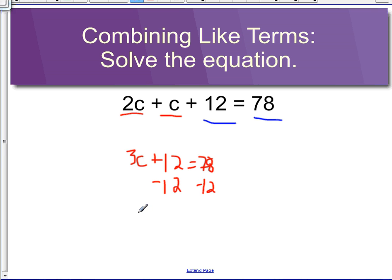Then we would be left with 3c equals 66. From here we can divide just like we normally would by 3 and divide by 3, and our answer would be c equals 22. So we're going to do a few more examples.